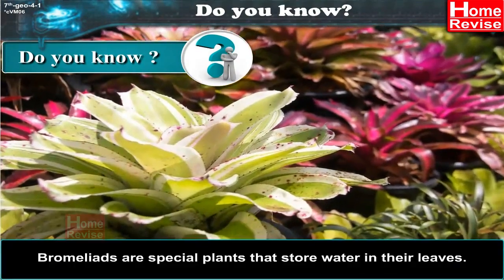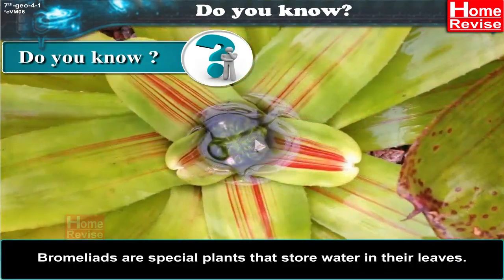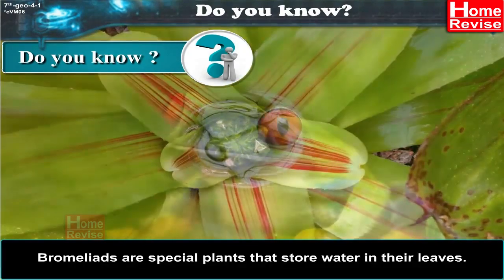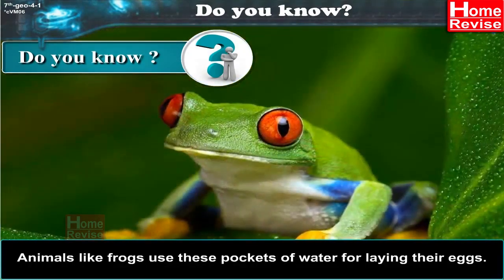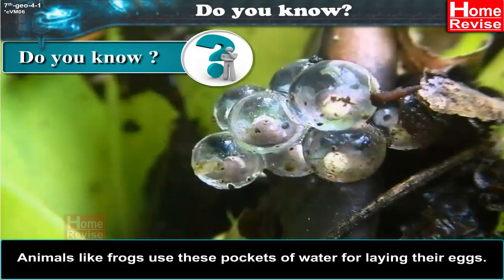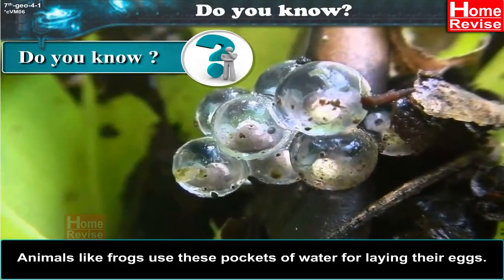Bromeliads are special plants that store water in their leaves. Animals like frogs use these pockets of water for laying their eggs.